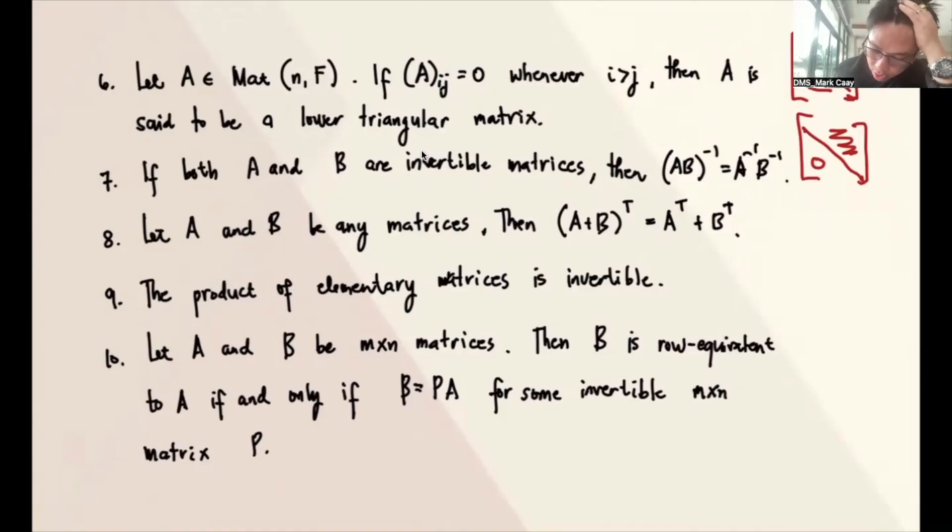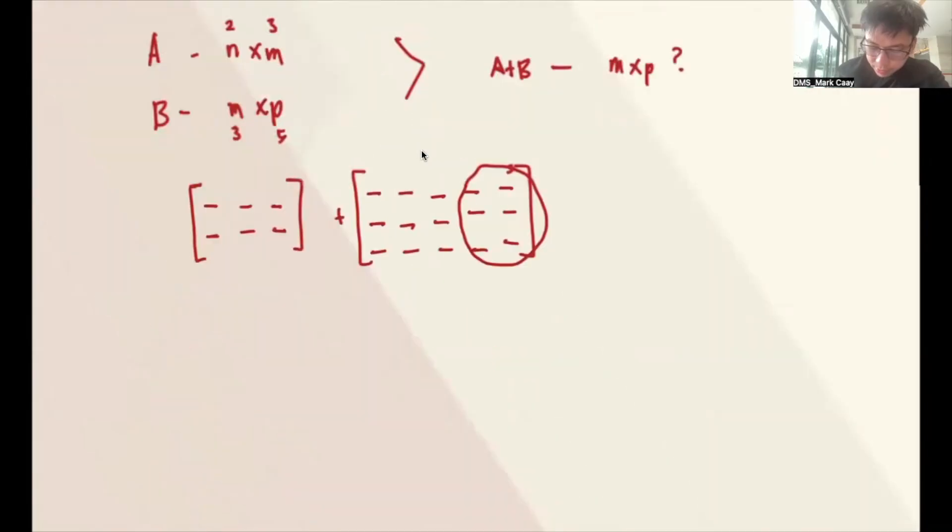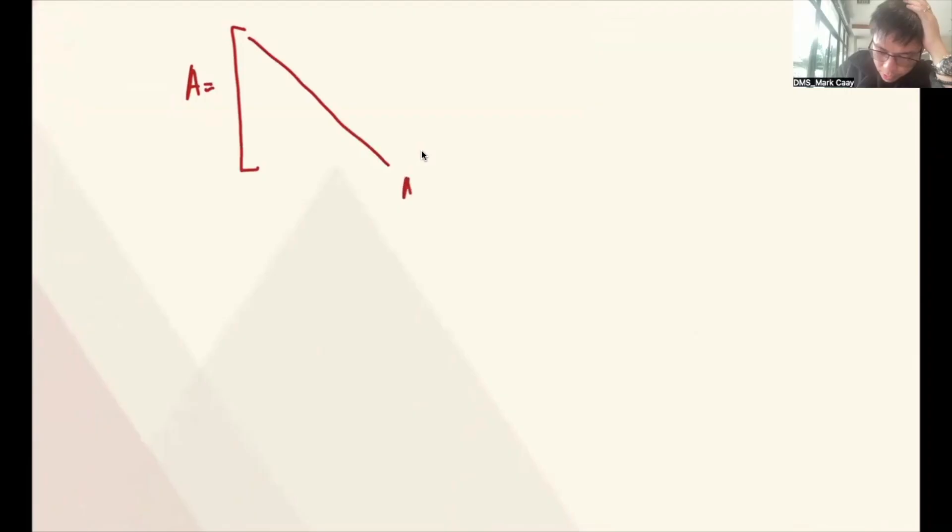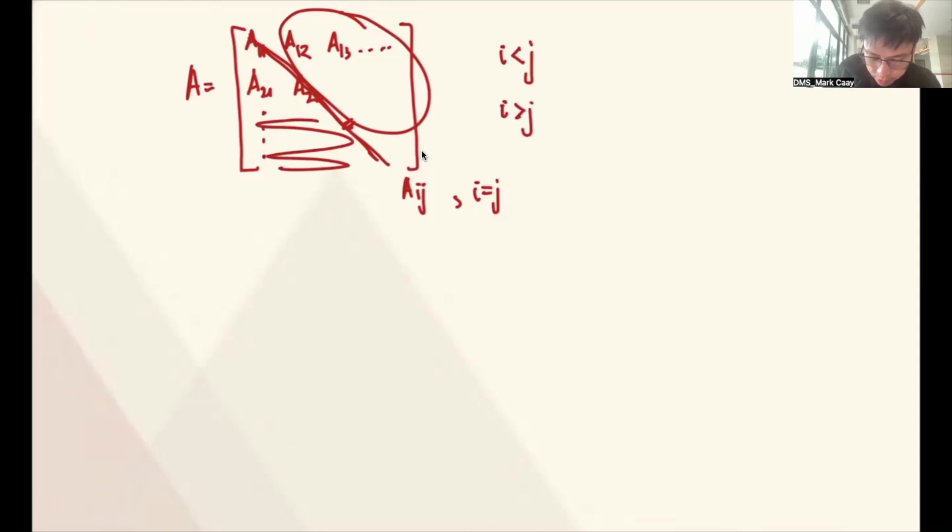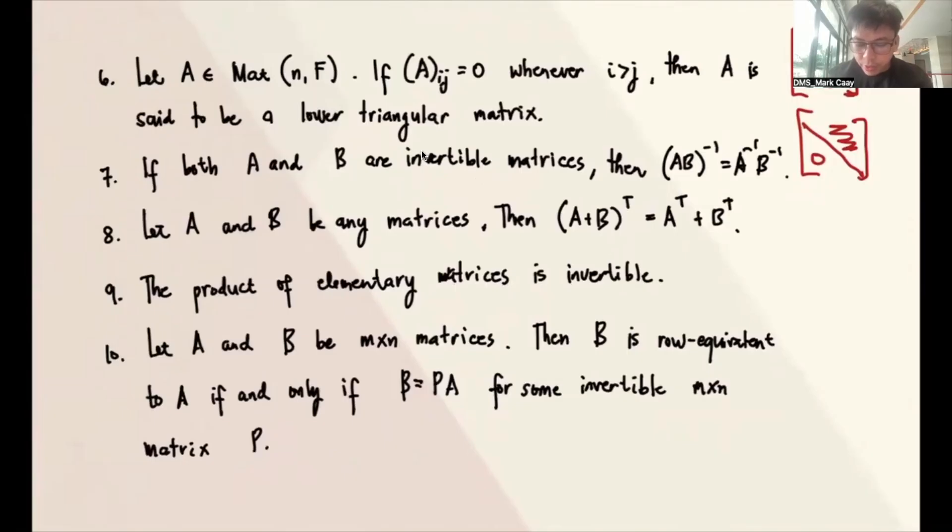Now, if you look into this, the Aij, if we map this as a matrix, this is Aij where I equals J. So let's say this is A11, A12, A13, and so on. And then this one is A21, A22, and so on. If you notice, these fall on the diagonal. That means on the right side, I is less than J. But on the left side, which is the lower part, I is greater than J. For example, A21, I is greater than J. But the statement says I is greater than J, so it should be at the bottom. So it says 0 at the bottom. So this is not a lower triangular, but this is an upper triangular. So therefore, this is false.